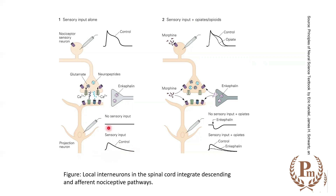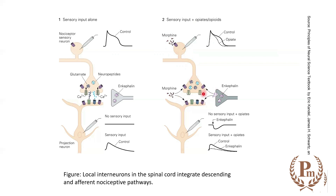With sensory input alone, we get stimulation of the projection neuron. But when opioids are given along with the sensory input, you are stimulating the enkephalinergic inhibitory interneuron, which releases enkephaline. This enkephaline stimulates the morphine receptors at the presynaptic level (reducing sensory input) and also at the spinal cord level, effectively reducing transmission through the pathway.